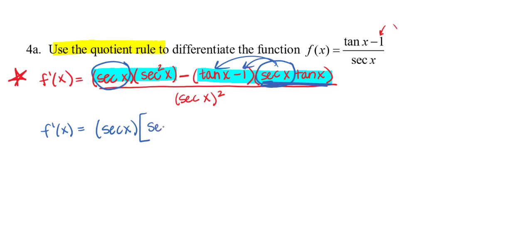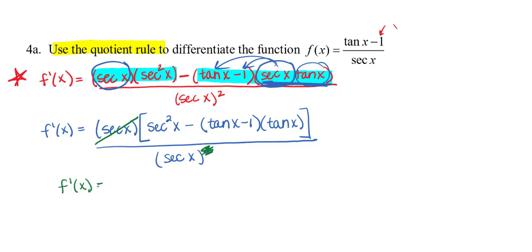That's going to leave me with just secant squared x in the first term, minus tangent x minus 1, and then just this tangent of x would be left over. Because the secant of x in the numerator is factored out, I can divide it out. So that's only going to leave one factor of secant x in that denominator. I'll multiply out my numerator. So I have secant squared x minus tangent squared x plus tangent x.